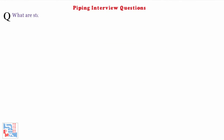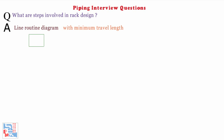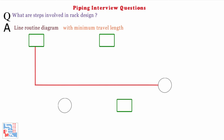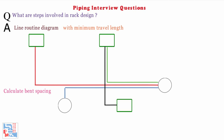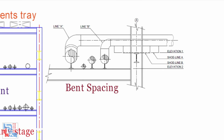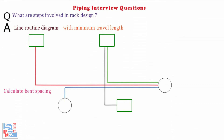Next: What are the steps involved in rack design? First, generate the line routing diagram to find the line origin and destination with minimum travel length based on the process flow diagram and preliminary P&ID. Calculate bend spacing between tier to tier, set rack width, and decide elevations and levels.